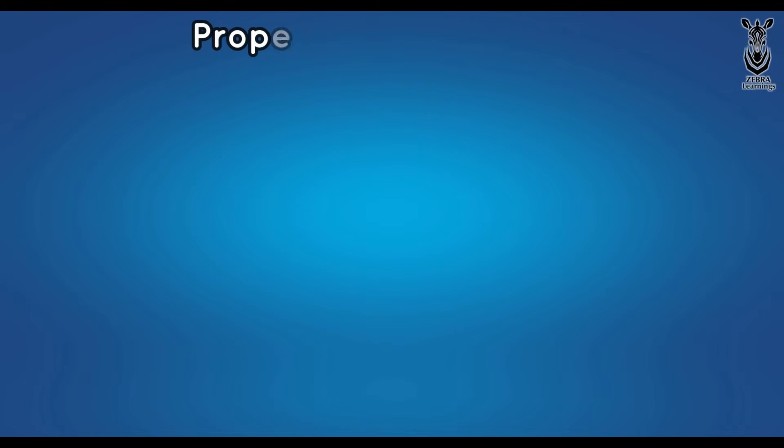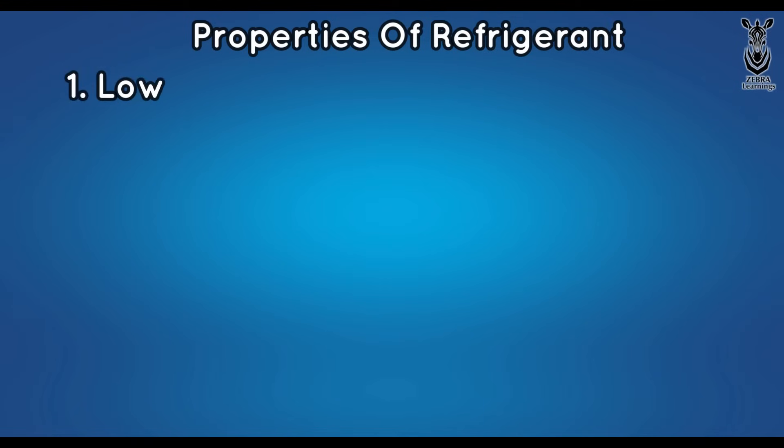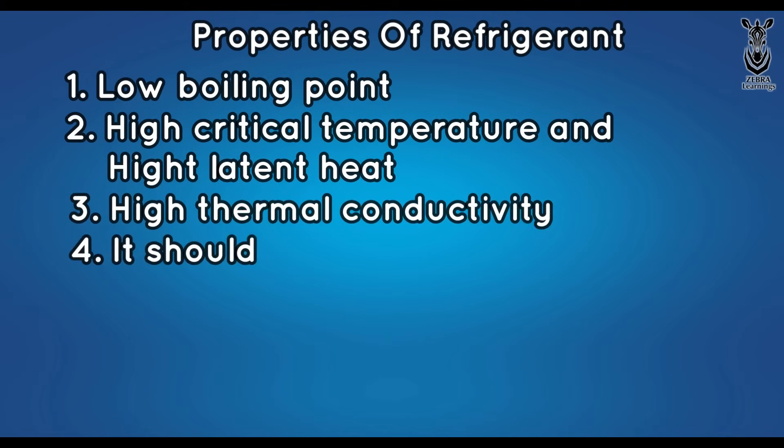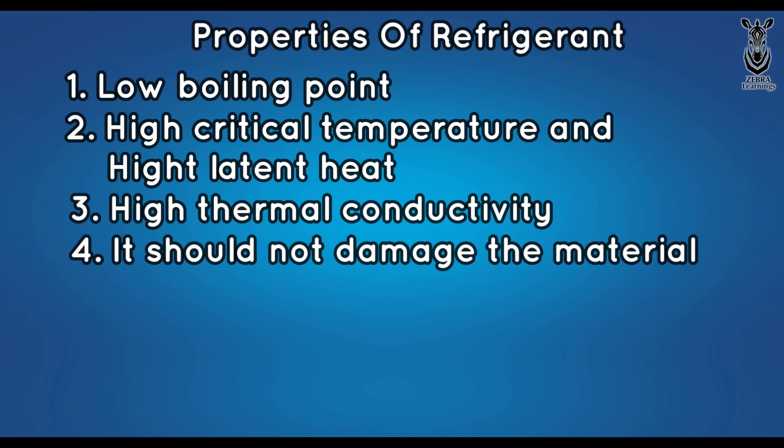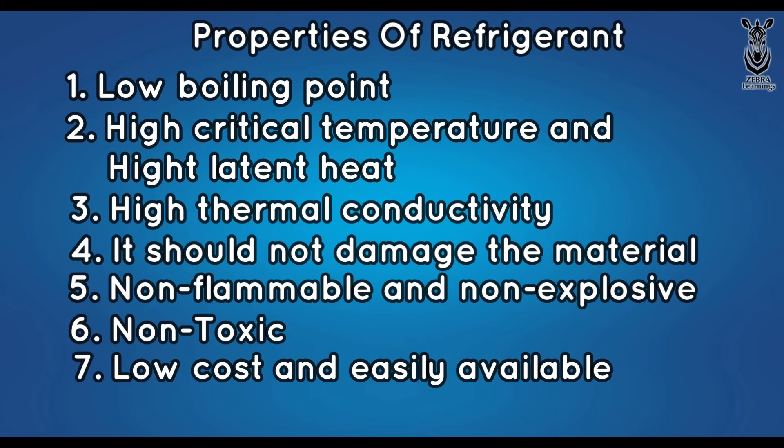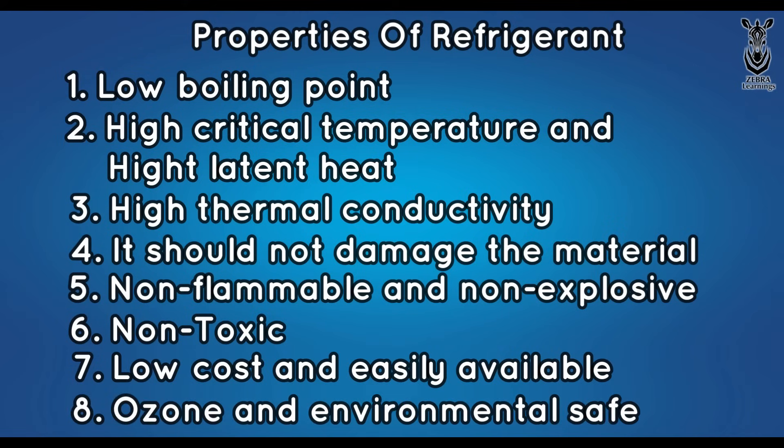A refrigerant must have certain properties. Its important properties are: Boiling point should be low. There should be high critical temperature and high latent heat. There should be high thermal conductivity. Should not cause any harm to the materials. Must not be flammable or explosive. Should not be poisonous. Should be cheap and readily available. There should be no harm to ozone layer and the environment.